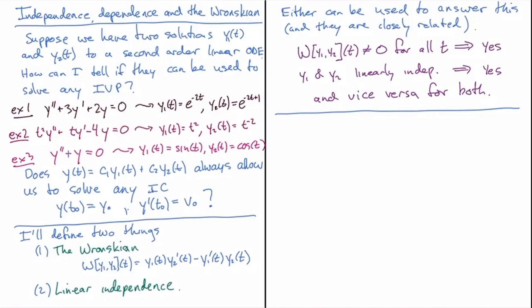Here's the definition — it's a little complicated at first glance, but it's actually related to a familiar concept. The Wronskian is an operator where you plug in y1 and y2, and out comes this expression that is also a function of t. We take y1(t) multiplied by y2'(t) and then subtract y1'(t) times y2(t).